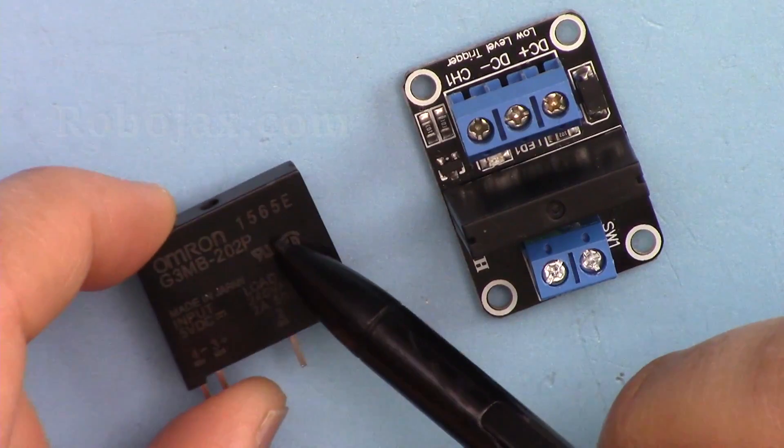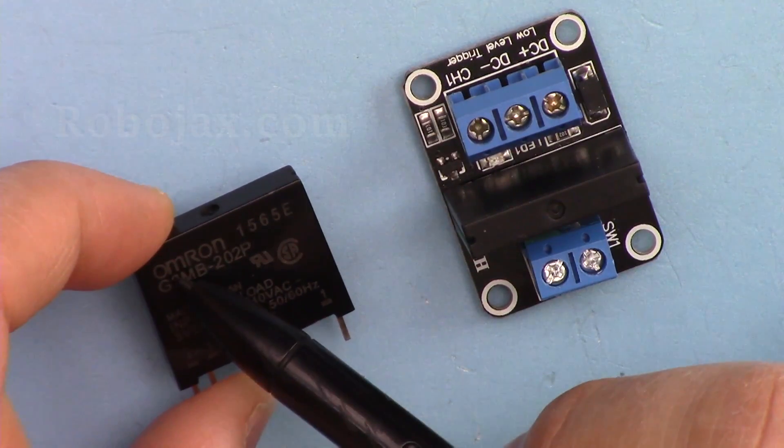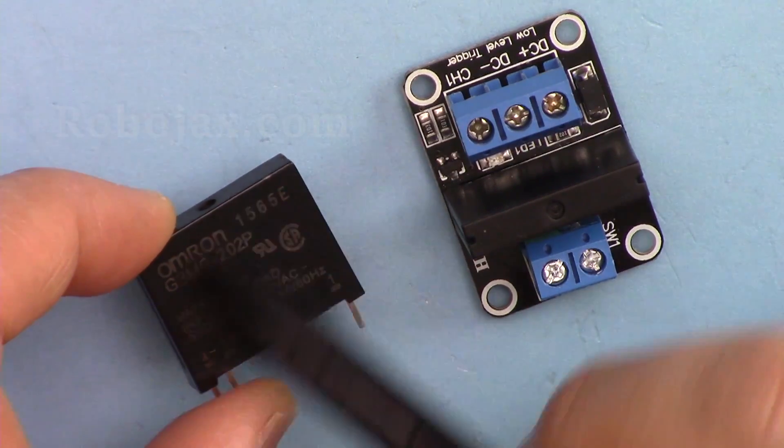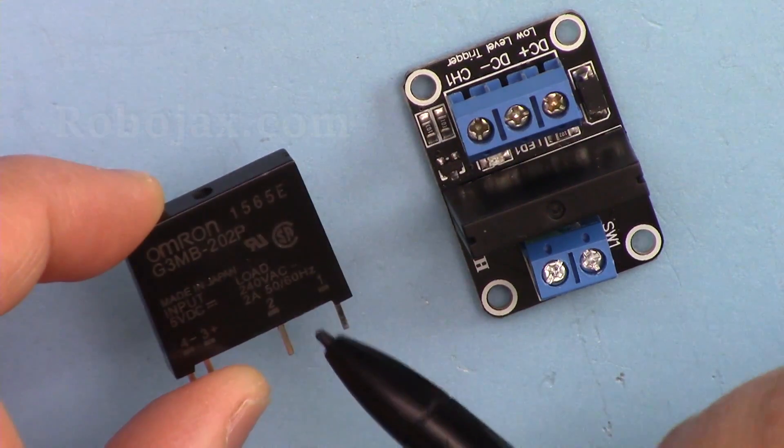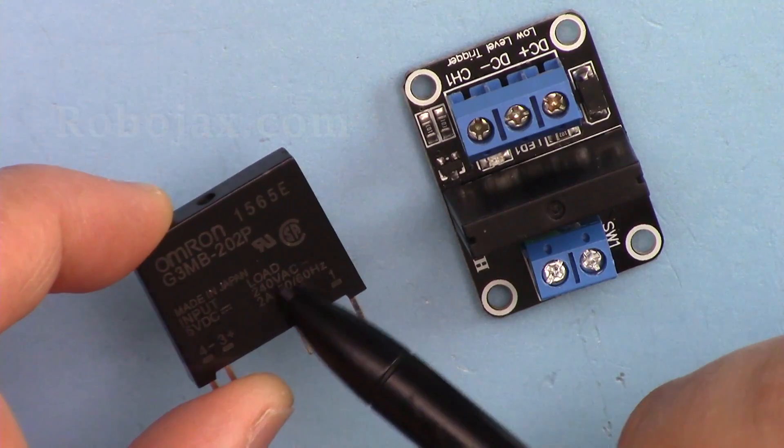There are many brands, but one of the famous ones is Omron, and this usually has a lower current rating of 2 ampere at 250 volts.